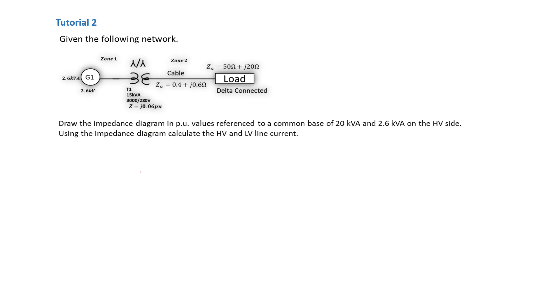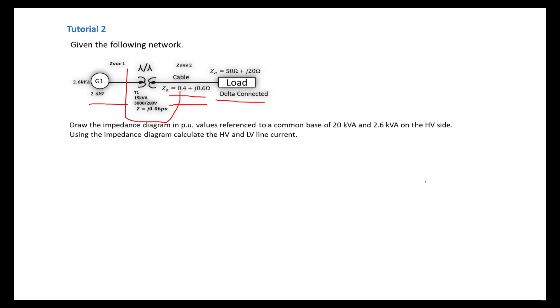The problem statement says we must draw the impedance diagram in per unit values, referenced to a common base of 20 kVA and 2.6 kVA on the high voltage side. This means we must replace all these electrical components with the per unit equivalent. We must use that impedance diagram to calculate the high voltage and low voltage current. This is a step-down transformer taking high voltage and stepping it to a low voltage side. Let's go right into it.